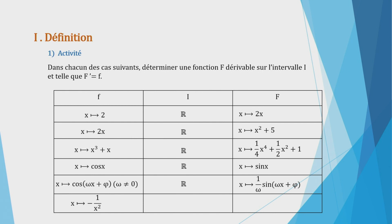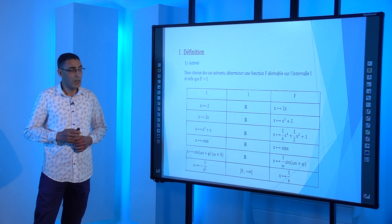Un dernier exemple avec la fonction rationnelle : la fonction petit f qui à tout x associe -1/x² est une fonction rationnelle, définie sur ℝ*. Comme on cherche une fonction grand F dérivable sur un intervalle, j'ai choisi l'intervalle ]0, +∞[. La fonction grand F qui à tout x associe 1/x est dérivable sur ]0, +∞[ et sa dérivée égale -1/x². Passons maintenant à la définition.